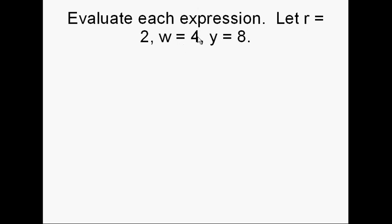So everywhere there's an r we'll put 2, everywhere there's a w we'll put 4, everywhere there's a y we'll put 8. Here's our first expression: r plus 2w minus y. What does 2w really mean? Right, it means 2 times w. Let's put these numbers in. That gives us r is 2, plus 2 times w is 4, minus y which is 8.